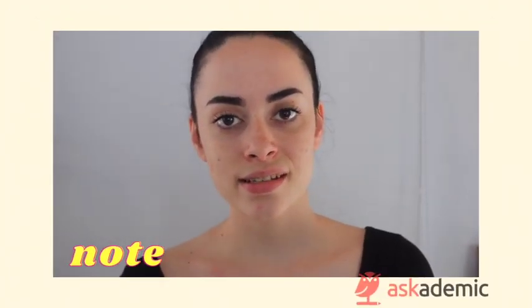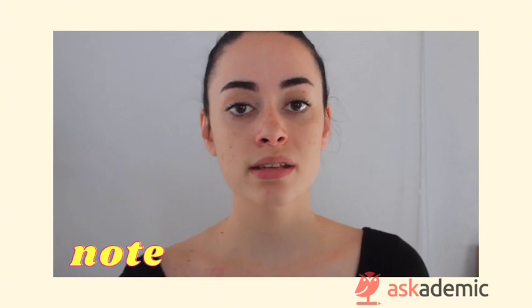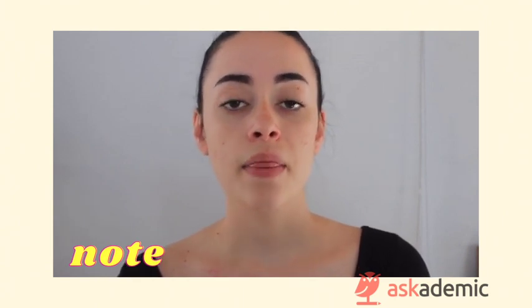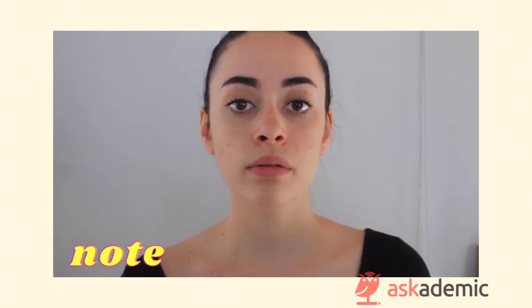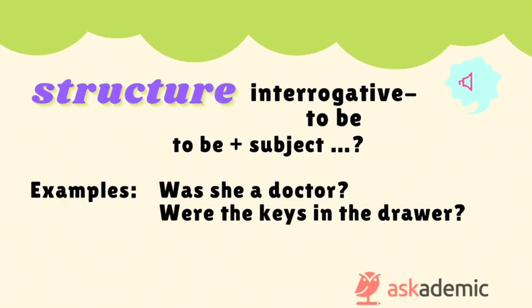In negative sentences, the auxiliary verb remains in the past — did — and the main verb will remain in the infinitive. The structure for an interrogative past simple sentence with the verb to be would be: to be plus the subject, the rest of the sentence, and a question mark. For example: was she a doctor? Were the keys in the drawer?